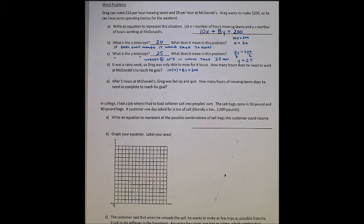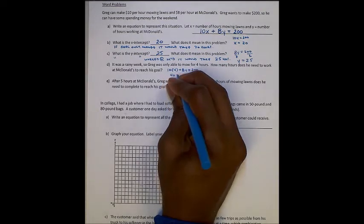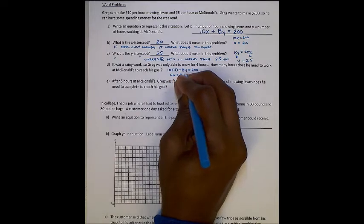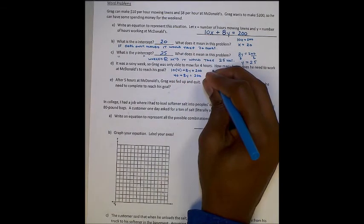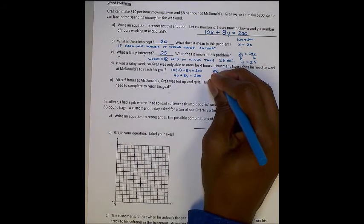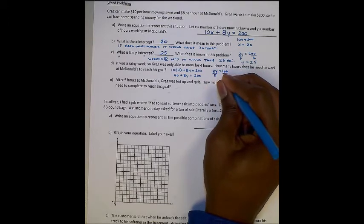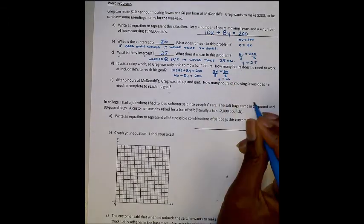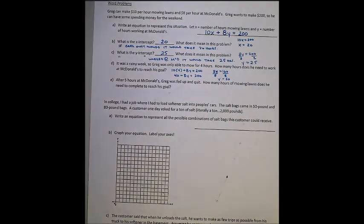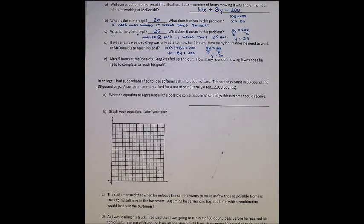Plus 8y, because we don't know how long he has to work at McDonald's. It's 200. And so what we have is 40 plus 8y equals 200. Or 8y equals 160. And then y will equal 20. So if he mows for 4 hours, he would have to work at McDonald's for 20 hours.